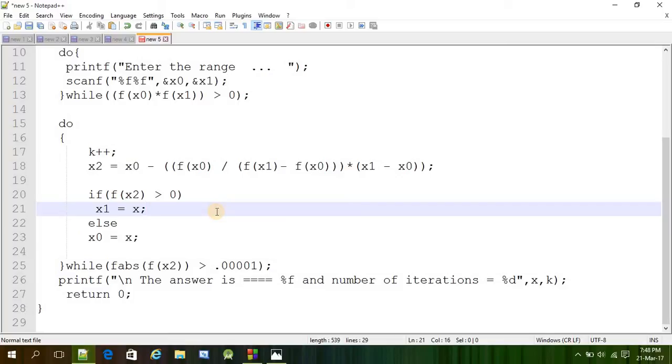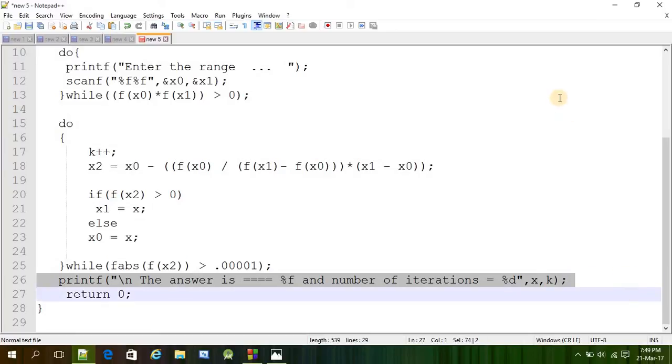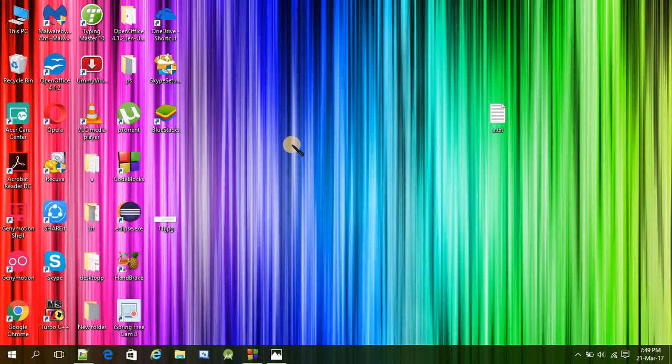And f of x2, if it is almost 0, because by this formula we are not directly going to jump into the root, so the value of f of x2 will not be 0 suddenly. It will go closer after every iteration, closer to the root. So if it is almost 0 we will take that value. So 0.0001 that is almost 0. If the value is greater than this we will rotate this loop again and if it is almost 0 then we will stop the loop and print that value of f of x2 and the number of iterations. That's it, hope you got that idea.